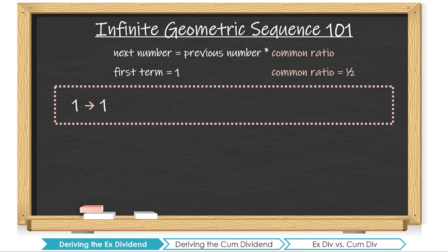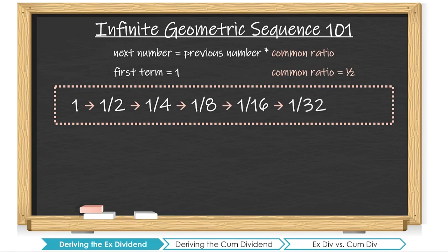Sure enough, the series grows from 1 to one-half, to one-quarter, to one-eighth, to one-sixteenth, to one-thirty-second, and so on. But if this sequence continues for infinitely many terms, how do we find the sum? Eventually, the terms become so infinitesimally small that the contribution of each next term is negligible. Thus, we can calculate the sum of an infinite geometric series with a formula.